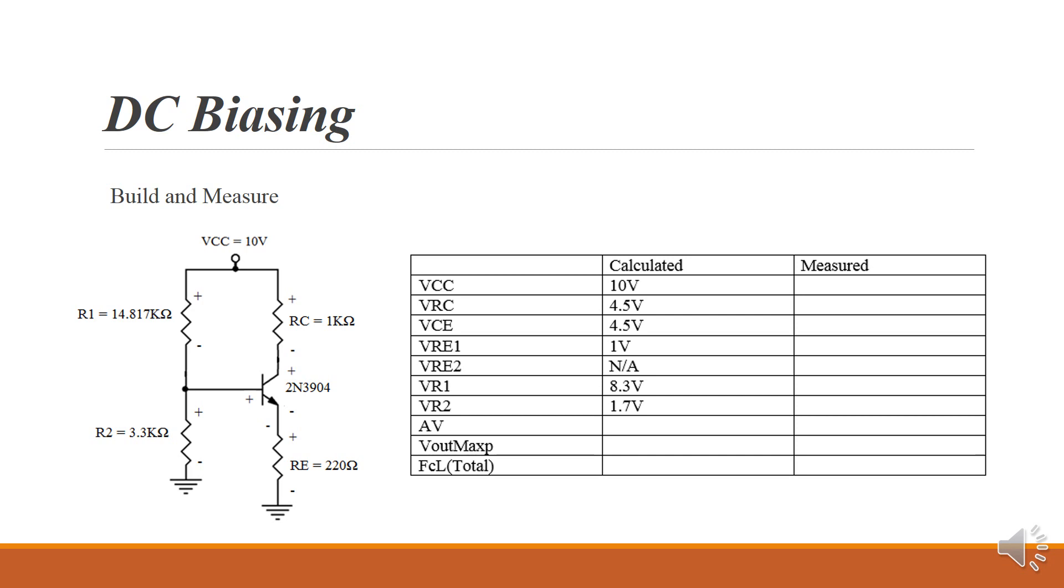VRE2 is going to be used to calculate gain, to help get the gain that we need in the next lesson. So right now, just NA that and treat VRE1 as though it's VRE. We've also got VR1 and VR2.